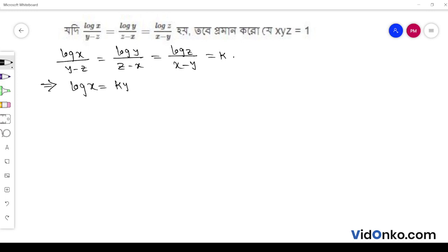Log x equals ky minus kz. Log y equals kz minus kx. And log z equals kx minus ky.